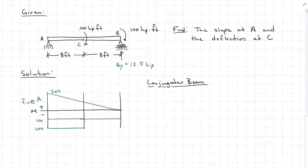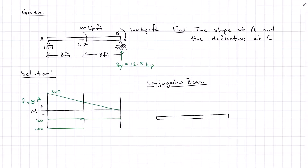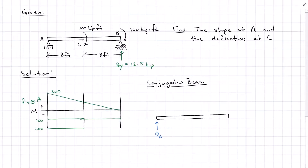The first thing I want to do is draw a beam that is the same size as the one I started with. Next, I'm going to replace the connectors with slopes and deflections. I have a pin at A — A prevents translation so there's no deflection, but it allows for rotation, so I replace it with theta A. Roller B does not allow deflection but allows rotation, so I replace roller B with theta B. Then I load my conjugate beam with the moment diagram.